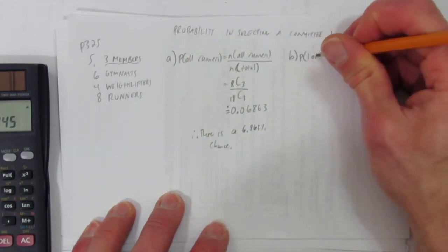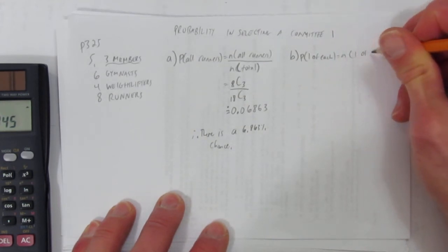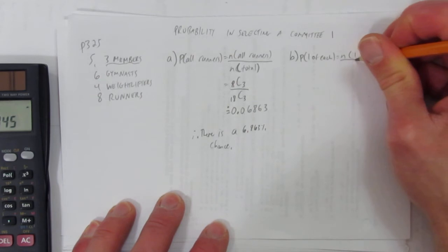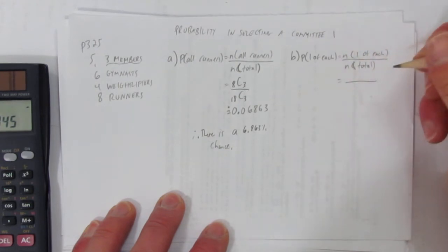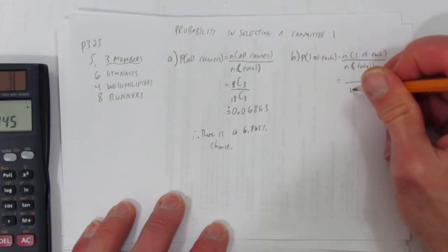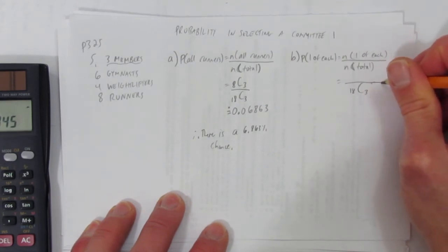The probability of one of each is just the number of ways to get one of each over the number of total ways. And the number of total ways hasn't changed at all. There's still eighteen people, and we're choosing three of them. But I'll need a bigger fraction here.